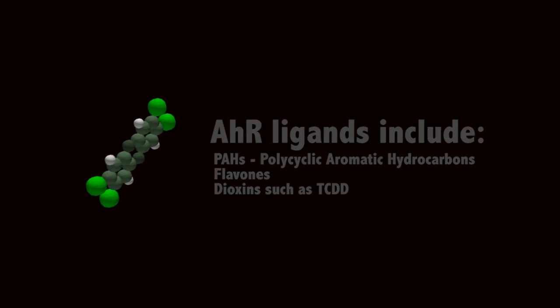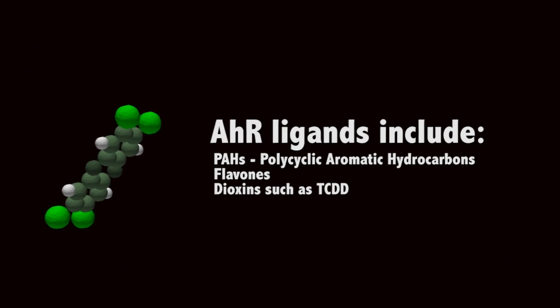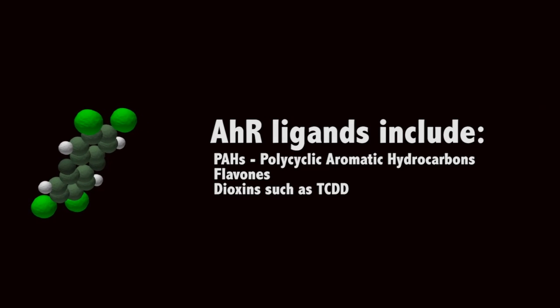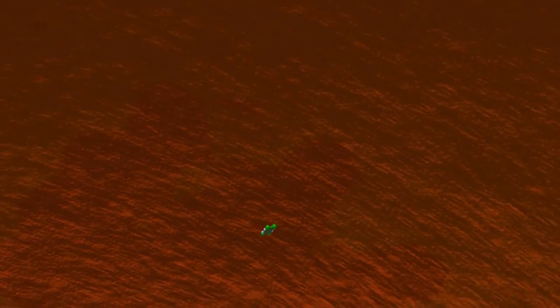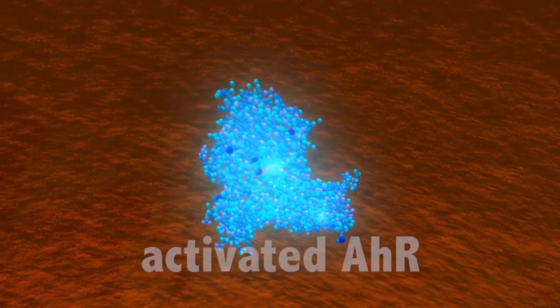AHR resides in the cytosol in its latent form until activation by an AHR ligand. AHR ligands include polycyclic aromatic hydrocarbons, flavones, and dioxins such as the most potent AHR agonist, TCDD.